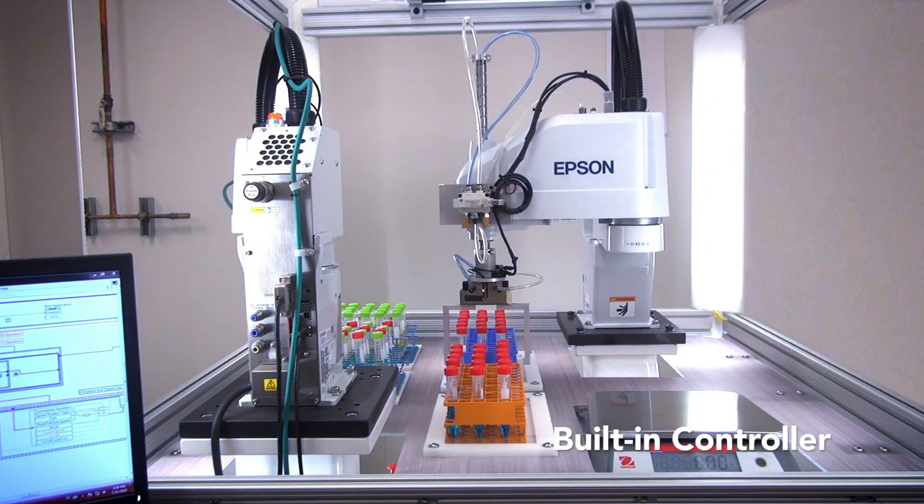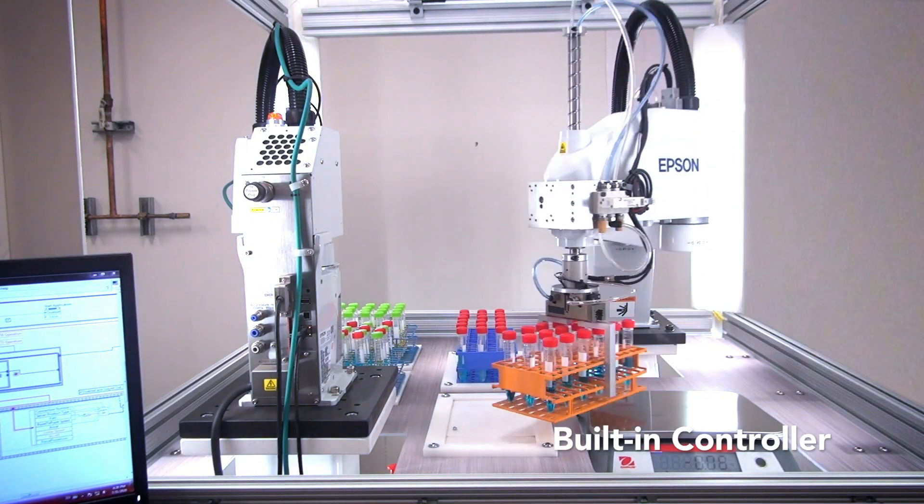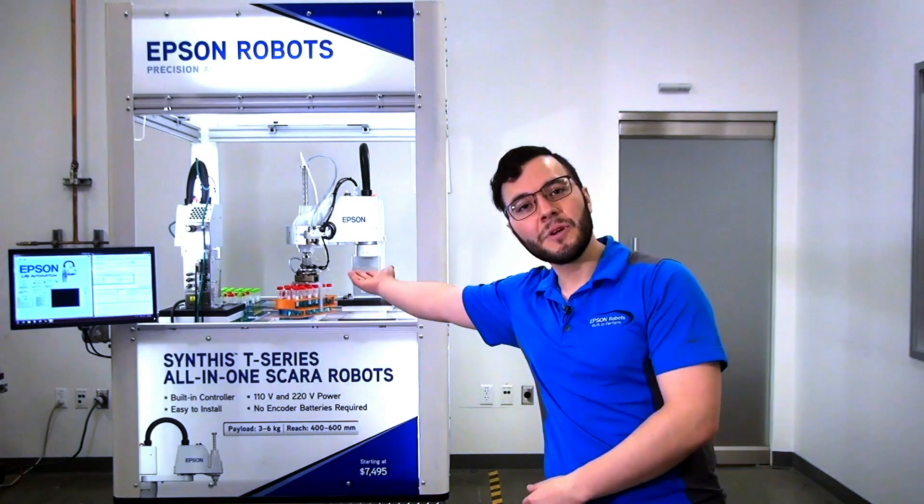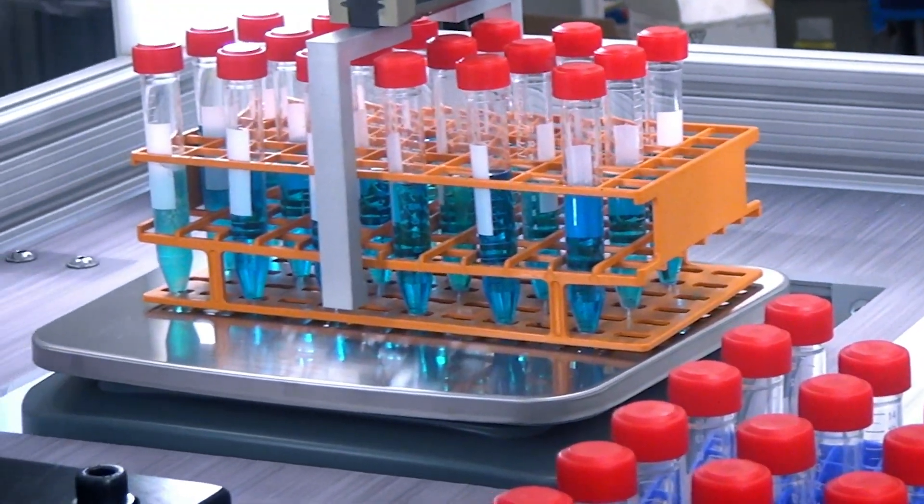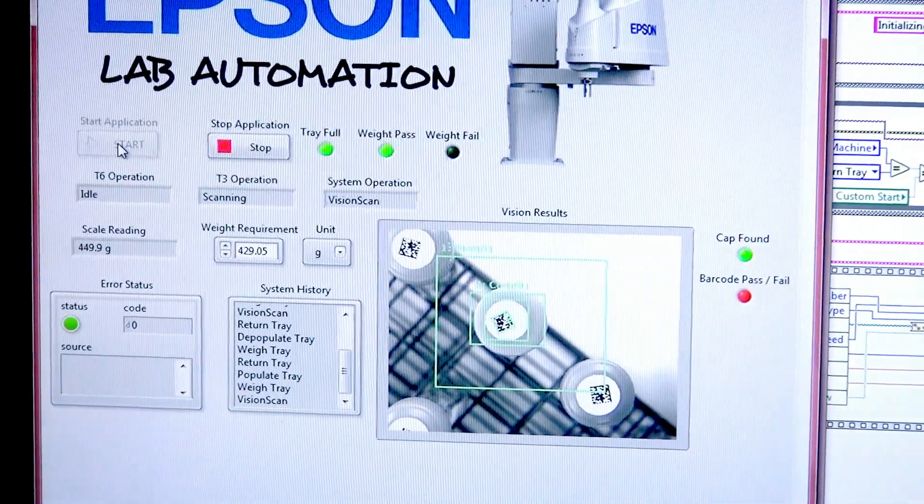What you see behind me is a T6 performing a pick-and-place operation and a T3 performing a vision-guided pick-and-place plus inspection utilizing Epson's vision system.